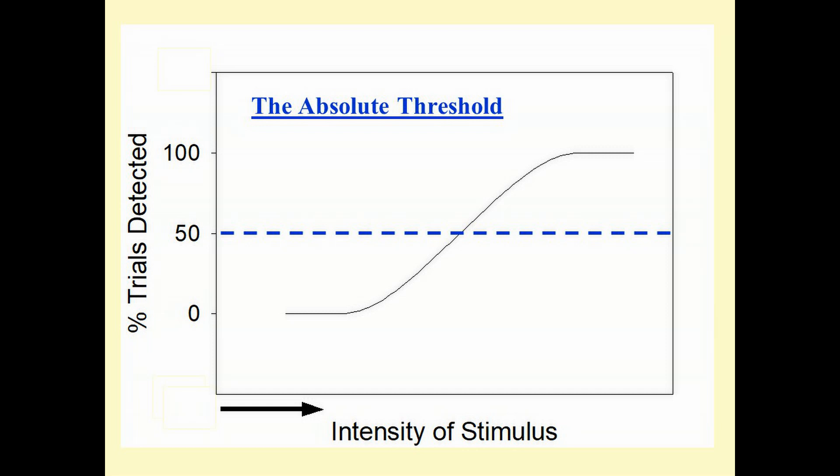So looking at this figure, what is the absolute threshold? It was a fairly arbitrary decision in the history of psychology. They might have selected 25 percent or 75 percent detection, but what was selected was 50 percent.